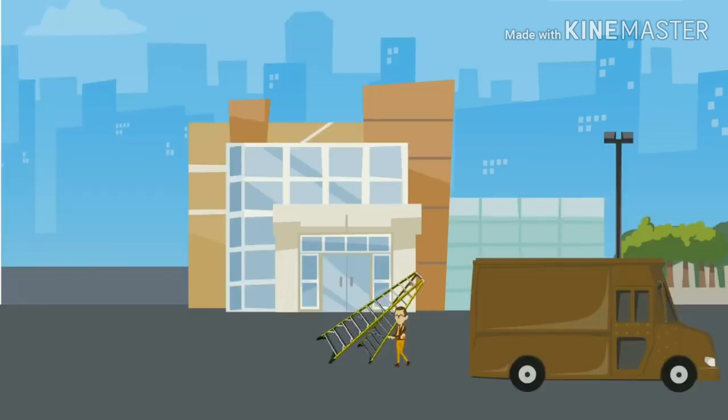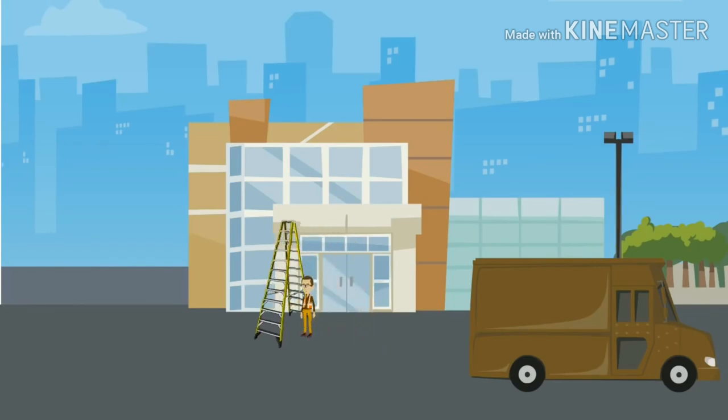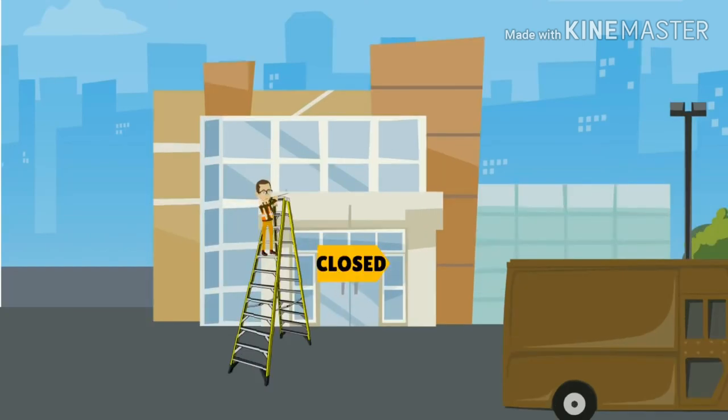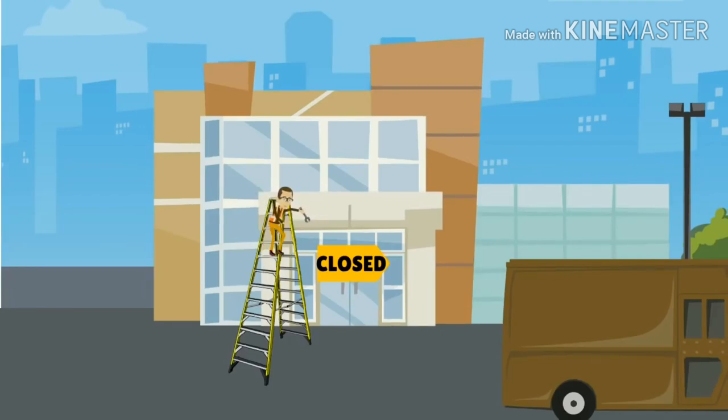Place a step ladder at right angles to the work, with either the front or back of the steps facing the work. When working from a step ladder, keep your hips within the two vertical rails. Reaching too far to the left or right could cause the ladder to topple.